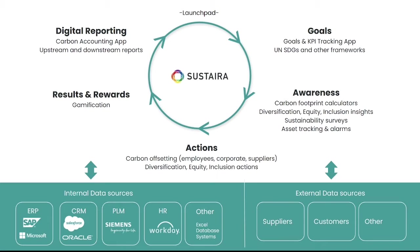This launchpad gives you that same setup, but with sustainability. So perhaps you're focused on goal setting — you have goals around sustainability but you don't have a way to track them and measure results. So you implement the goals and KPI tracking app by Sestera. As you start outlining your goals, you have to start somewhere, which often begins in awareness. So you also want to add on an application for a carbon footprint calculator or an application that dives into diversity, equity, and inclusion, both of which Sestera offers.